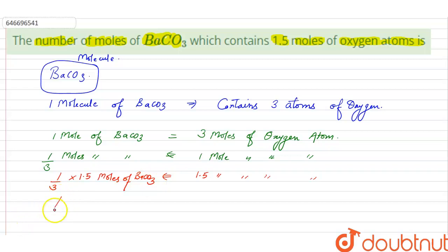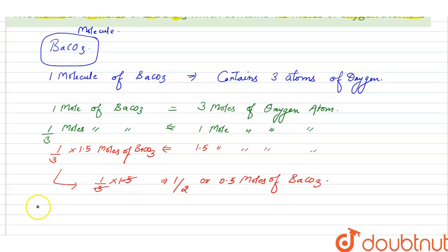So when we calculate this value, that is 1 by 3 into 1.5, it is equal to 1 by 2 or 0.5 moles of BaCO3. Or we can write it as 1.5 moles of oxygen atom... 1.5 moles of BaCO3. So this is our answer.